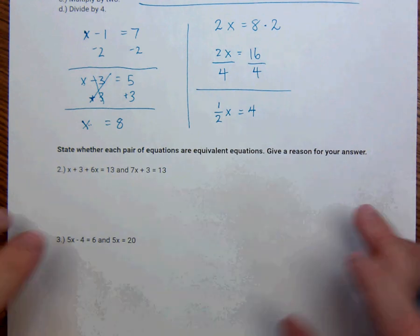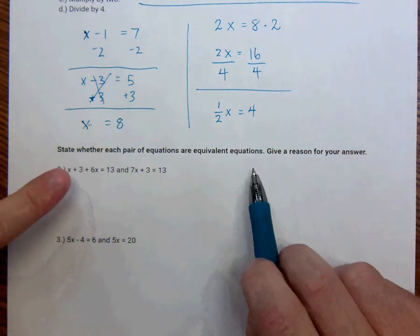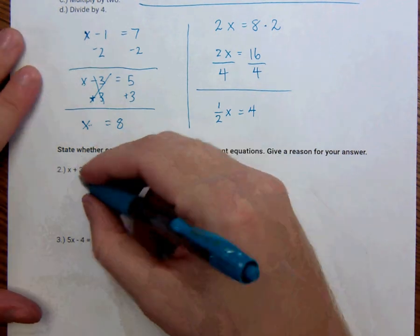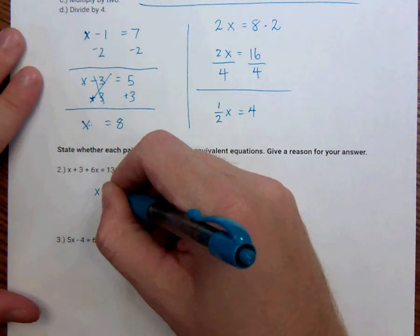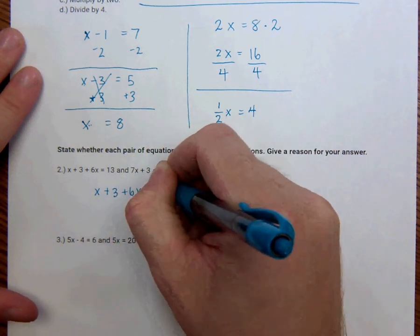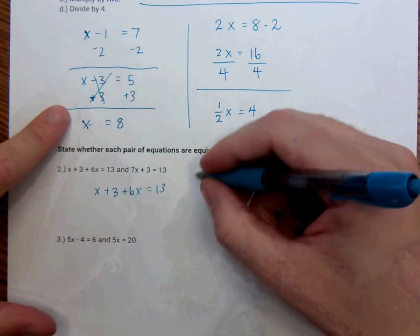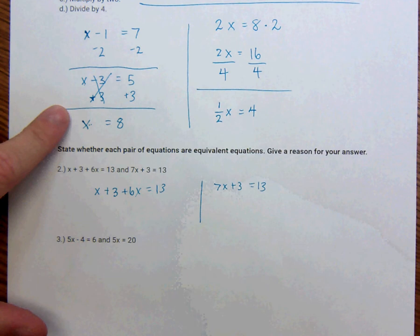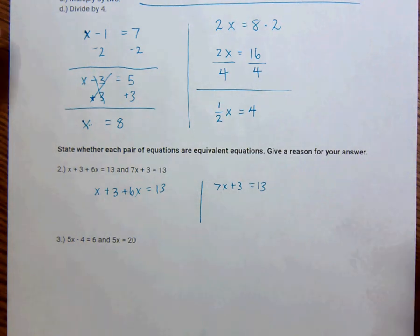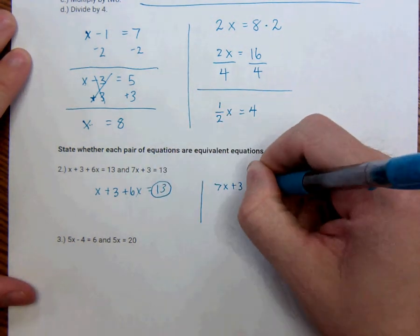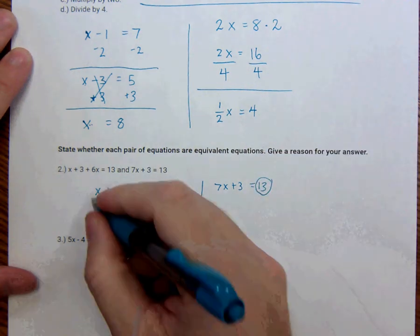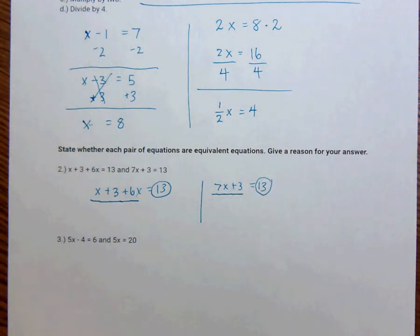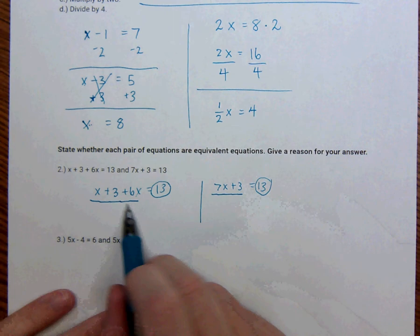So here we're going to state whether each pair of equations are equivalent. And then we're going to give a reason. Alright, so this one. So my first one is x plus 3 plus 6x equal to 13. And I want to see if that's the same thing as 7x plus 3 is equal to 13. So I'm going to look for things that are similar. So this has 13 and this has 13. So basically I want to know whether or not this right here is the same thing as this right here. Okay, so let's try to do that. This has more terms.